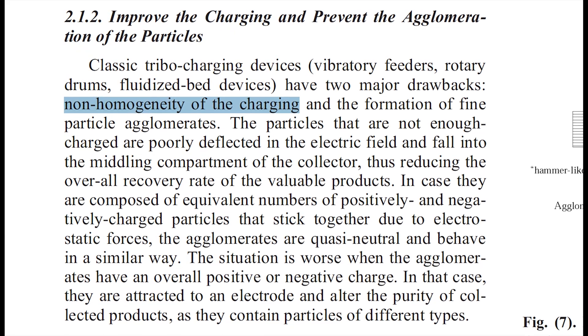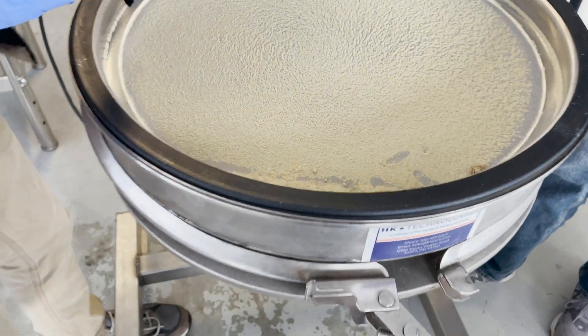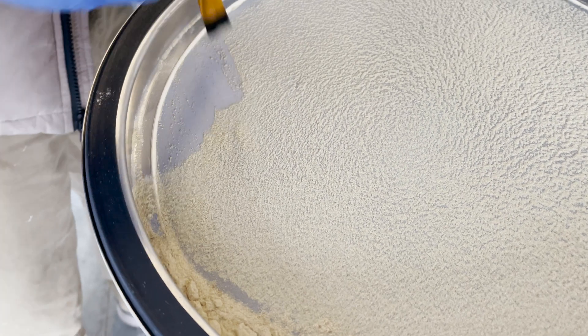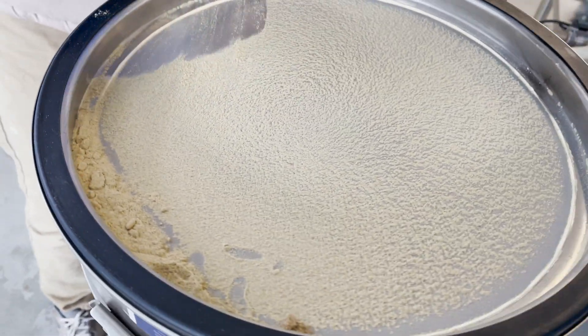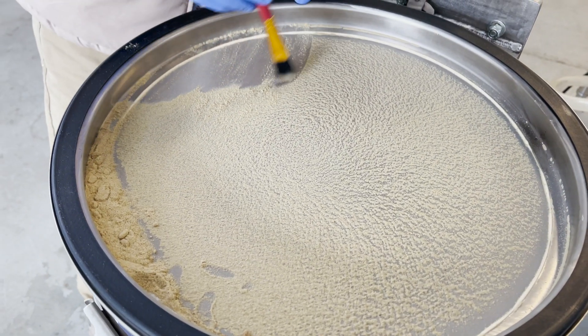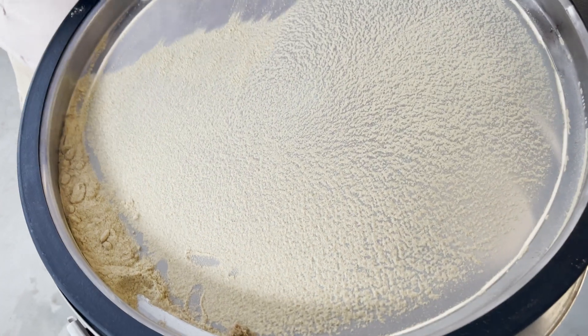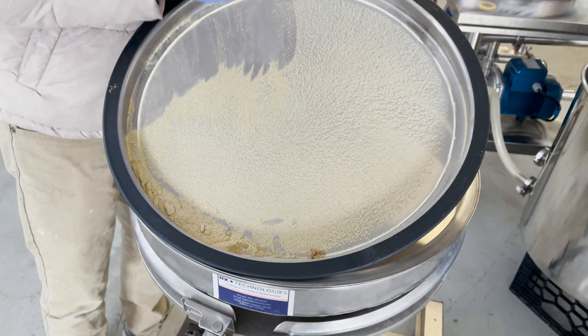reducing the efficiency of the separation. For this reason, it's important to classify particles by size prior to separation to create a product that is as homogeneous as possible. This can be easily achieved by sifting through screens.